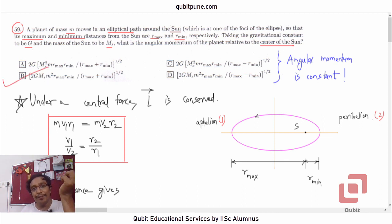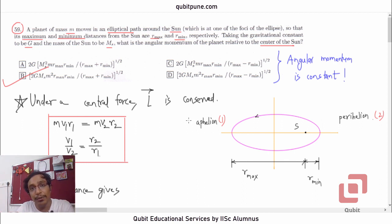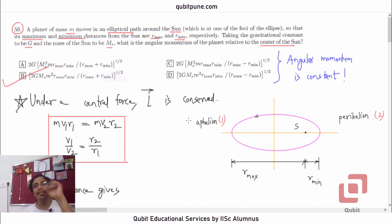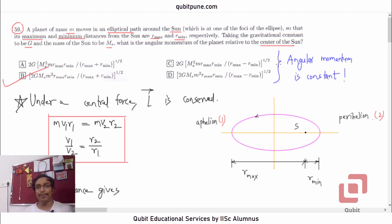Even if you did not know that angular momentum is conserved in the case of a central force, the options themselves tell you that there is no variation of angular momentum with either space or time, leading to the conclusion that angular momentum is constant. We also used energy conservation. That is question number 59. In our next video, we will go to the last MCQ from 2018.